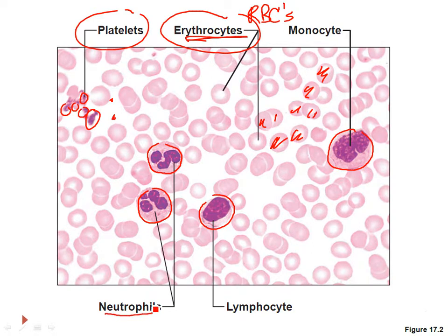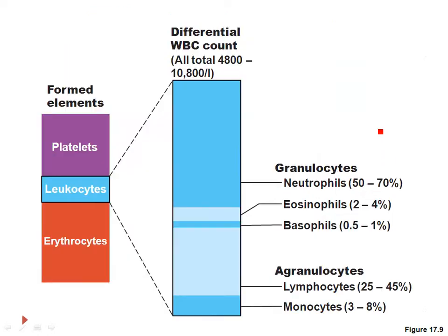We're going to be focusing in on these other larger cells. These are examples of different types of your white blood cells. You'll notice there are a whole lot more erythrocytes or red blood cells present than these white blood cells. These white blood cells have different names like neutrophils, lymphocytes, and monocytes. They're typically larger than your average red blood cell and have very different functions.